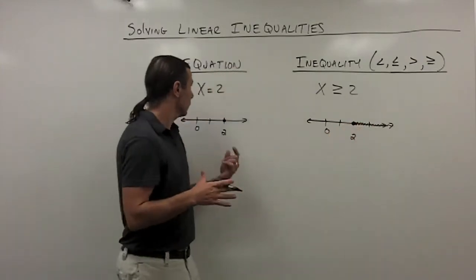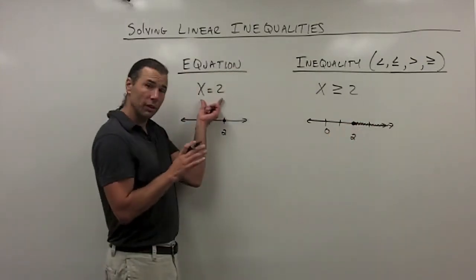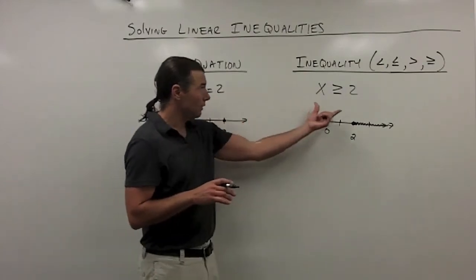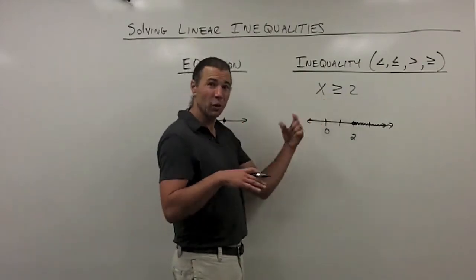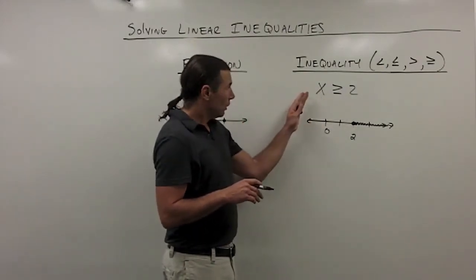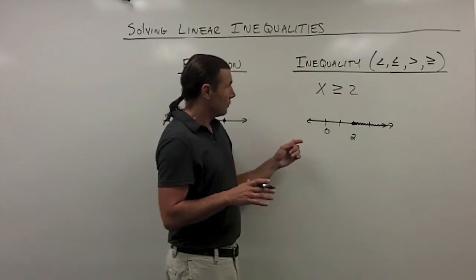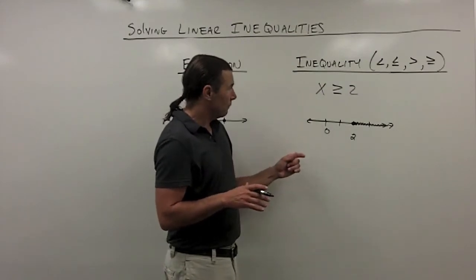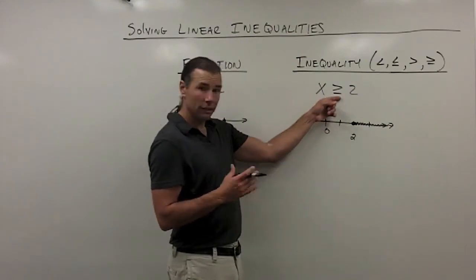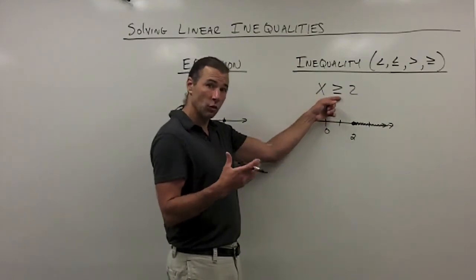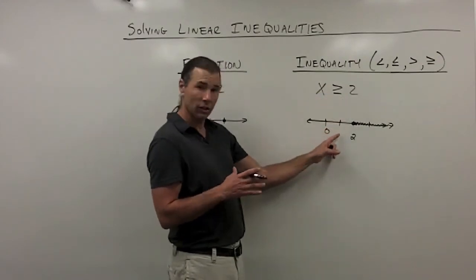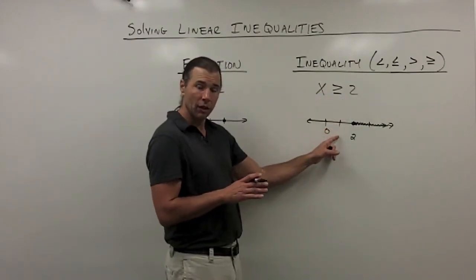So equations typically have one solution, while inequalities typically have a whole set of solutions. There are a couple of ways to express this answer: we can write the inequality as x is greater than or equal to 2, which is pretty clear, or we can graph it on the number line.